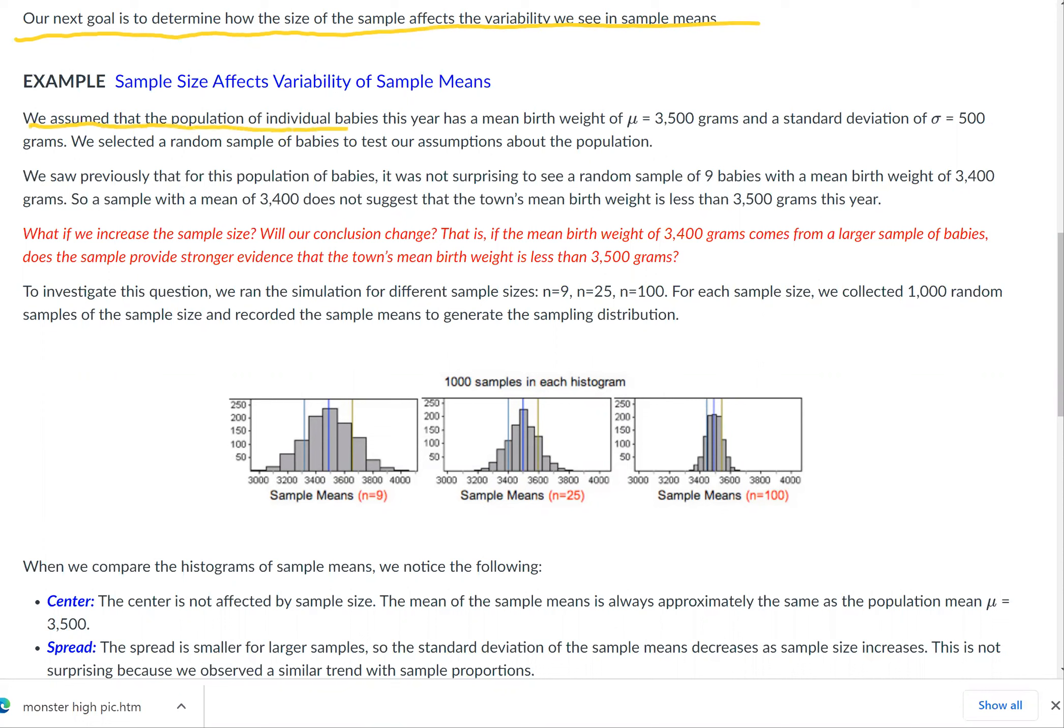We assume that the population of individual babies this year has a mean birth weight of the same as it was in 2005, 3,500 grams, and a standard deviation of σ = 500 grams.